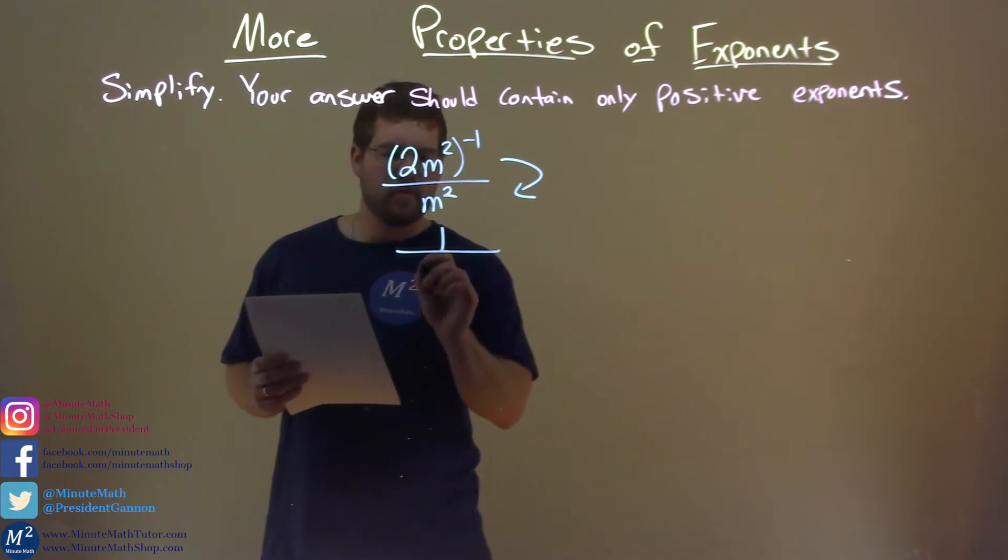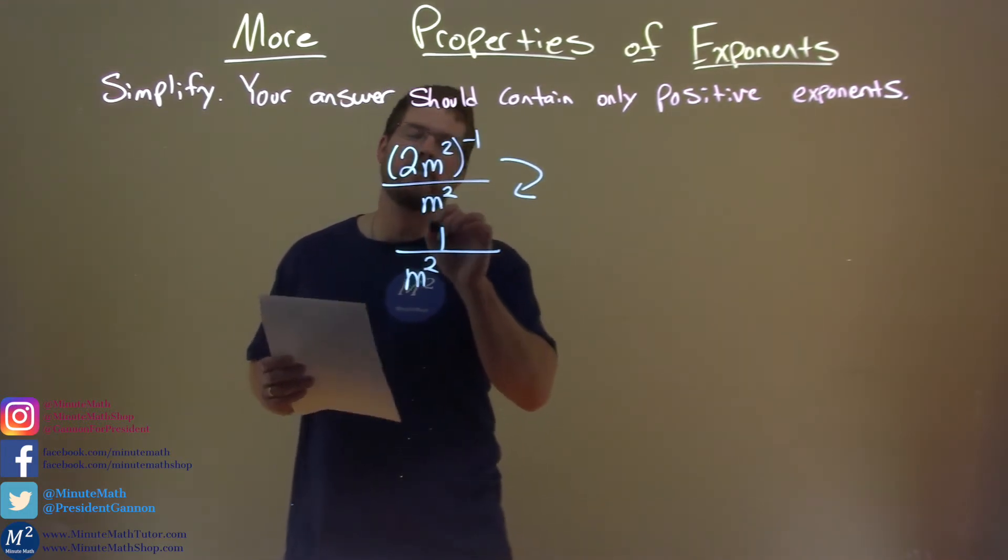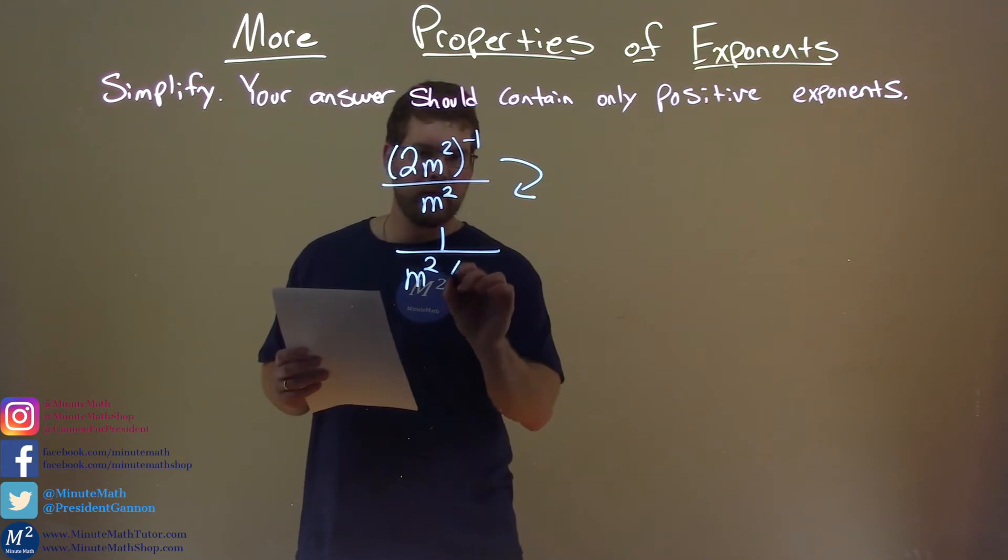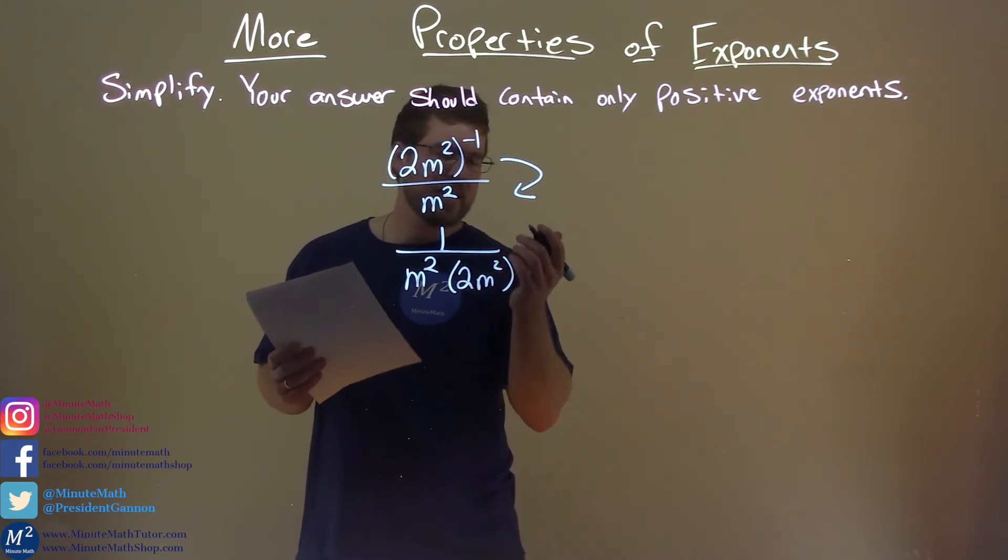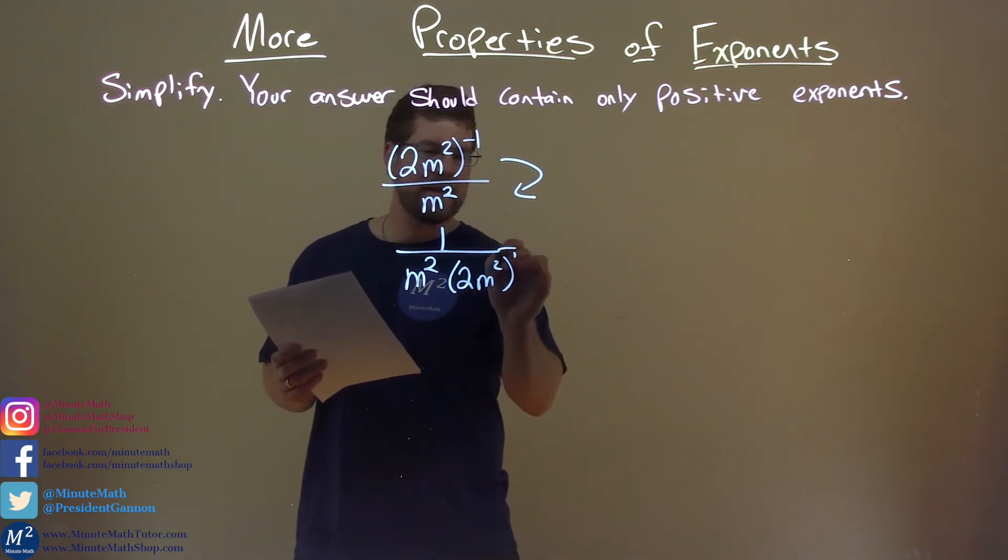So, two different writes there. So we bring down, or just keep the m squared down there. It has to be a 1 in the numerator. We bring down the 2m squared to the first power, but we don't need to write that, right? The first power is there but it really doesn't mean anything.